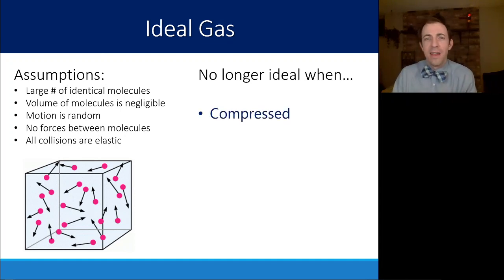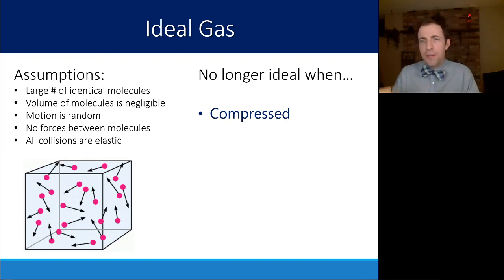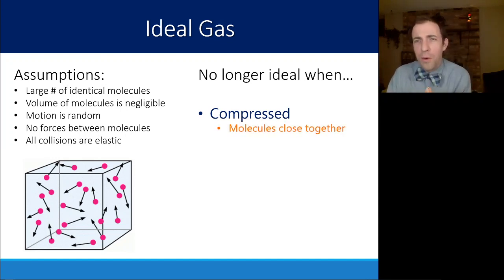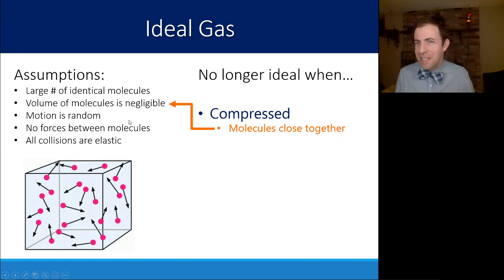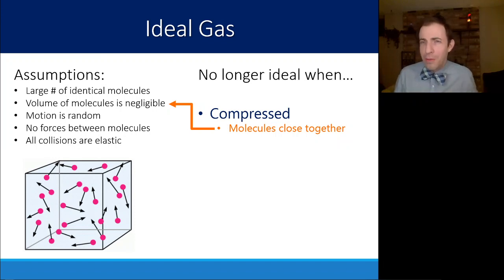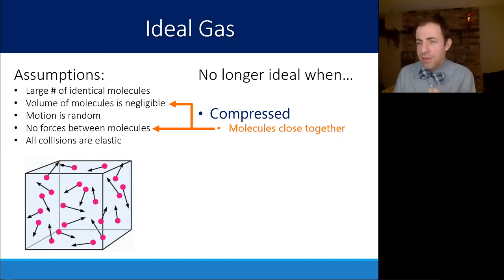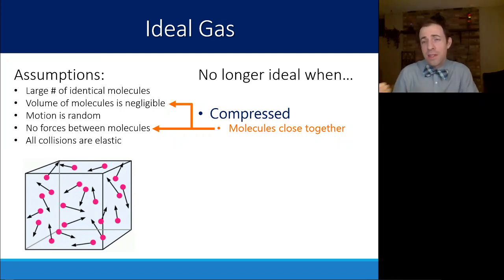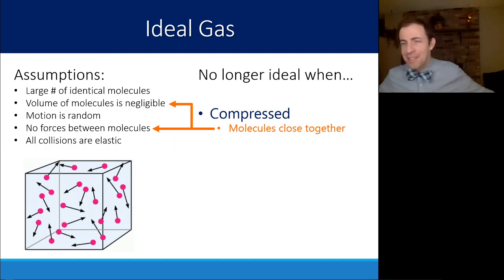A gas is no longer ideal if it is heavily compressed. If you think of a CO2 canister, it's heavily compressed, and because of that the molecules are so close together that it breaks a couple of these assumptions. The volume of the molecules is no longer necessarily negligible because they are so much closer together that the empty space between them is a smaller ratio to the overall volume. You're also breaking the assumption of no forces between molecules, because the more you compress them and the closer they get together, the more those intermolecular forces start to take hold.